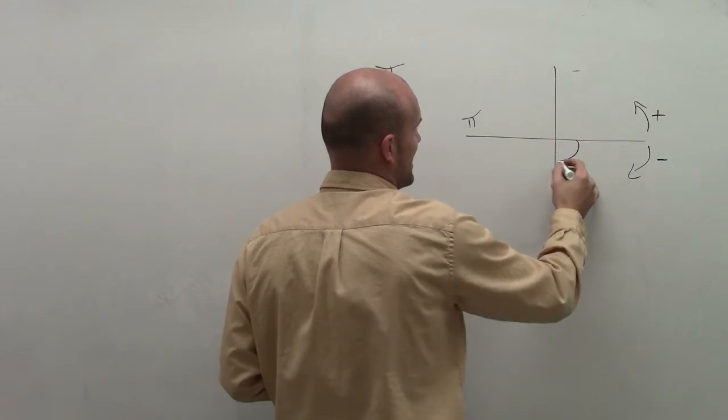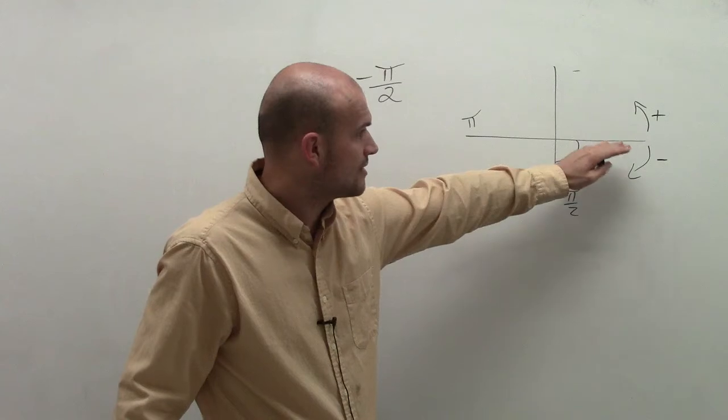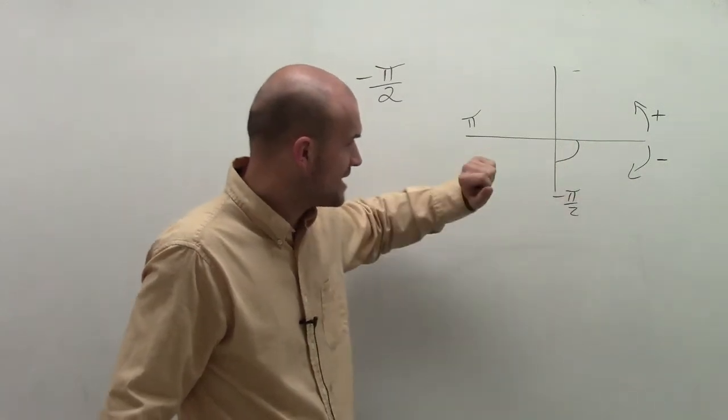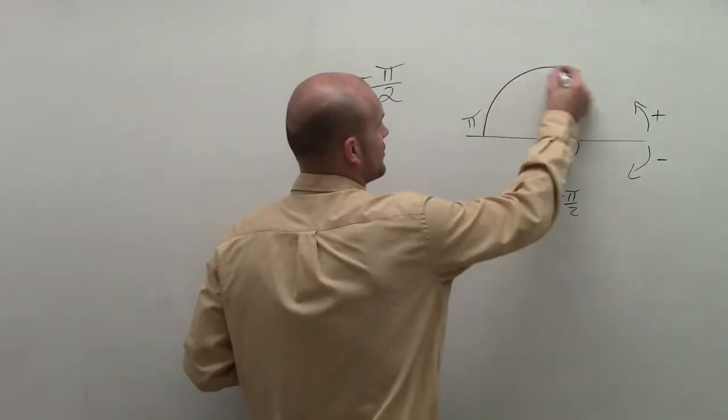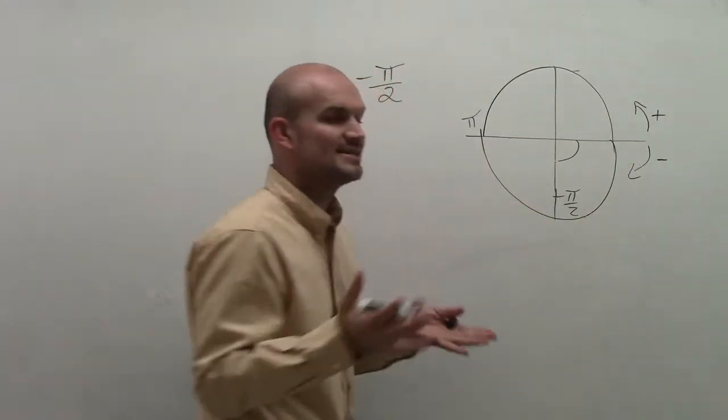So therefore, I'm going to have an angle that is going to extend from your initial point, our initial line here, to my terminal side. Now, if I was going to draw out my unit circle, remember the unit circle has a radius of 1.